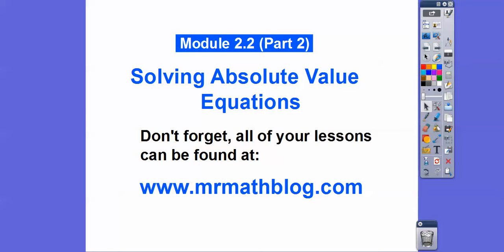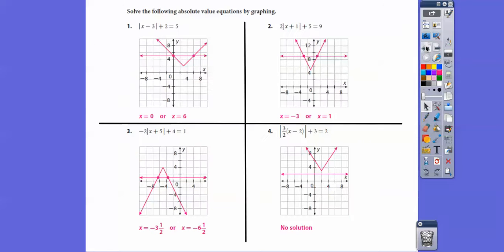I have the answers to the last section, so pause it if you need to. That's the answers to the last section. It said solve by graphing, so you solve this side and graph this absolute value, and then you graph this side. This is your y sub 2, so here's y sub 2 equals 5. The solution is the x values where the two lines intersect, where the absolute value intersects that horizontal right there.